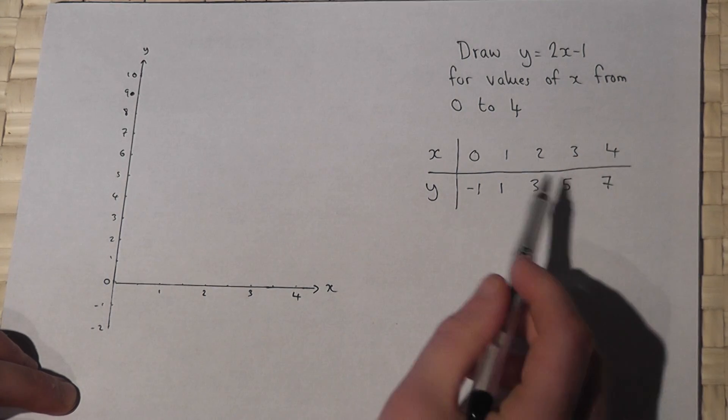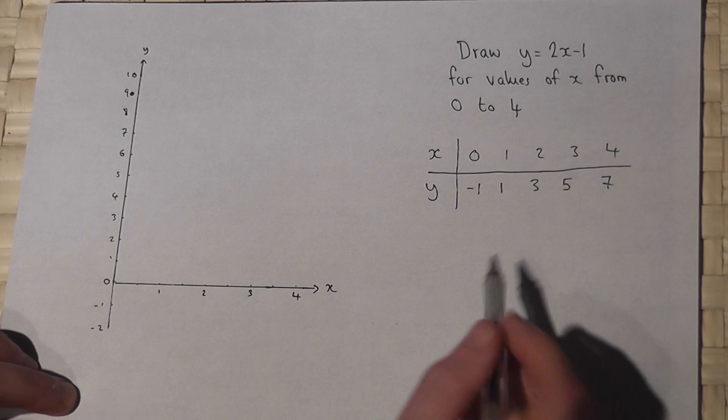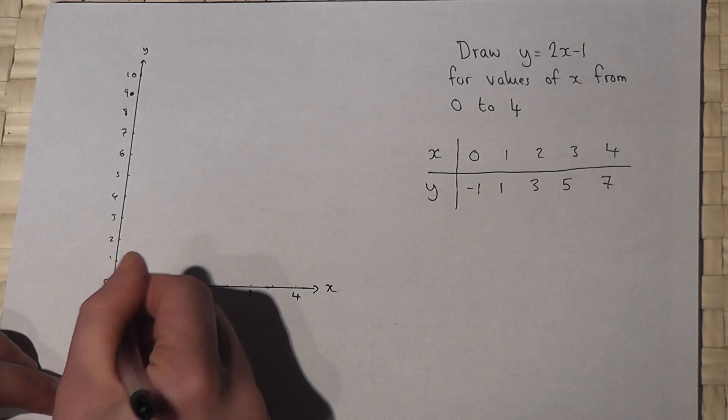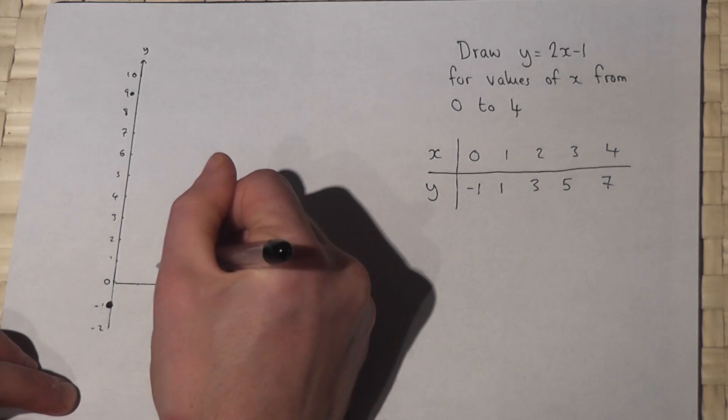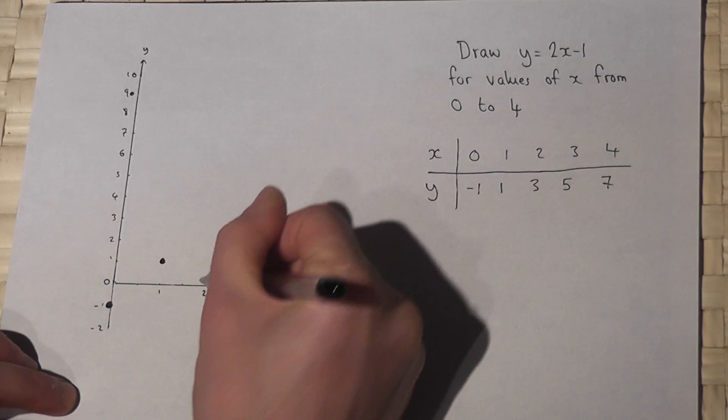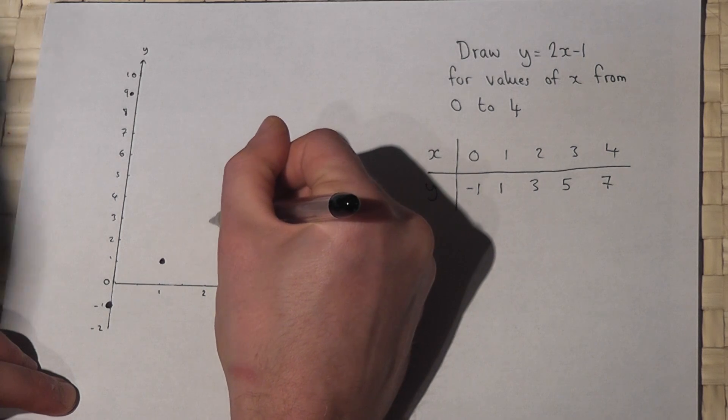So these are the y-coordinates for any given x-coordinate. So when x is 0, y is minus 1. When x is 1, y is 1. When x is 2, y is 3.